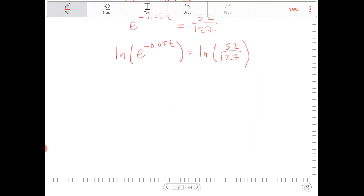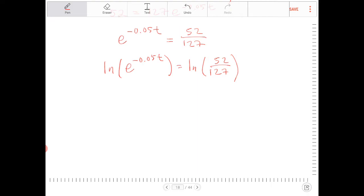So now that we got the equation to be in this form, we're going to apply the power rule for logarithms. And if we have a power inside the argument of a log expression, that power becomes a coefficient. So that becomes negative 0.05t natural log of e is equal to natural log of 52 over 127. And since ln of e is an identity, it's 1, this becomes negative 0.05t is equal to ln of 52 over 127.